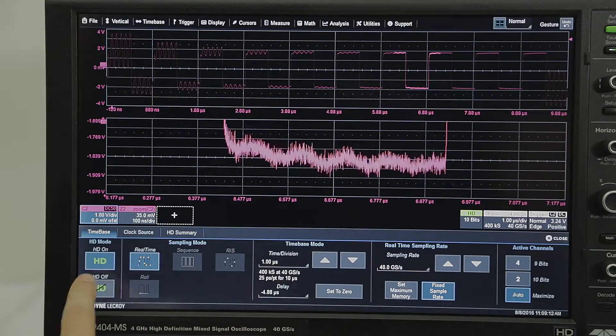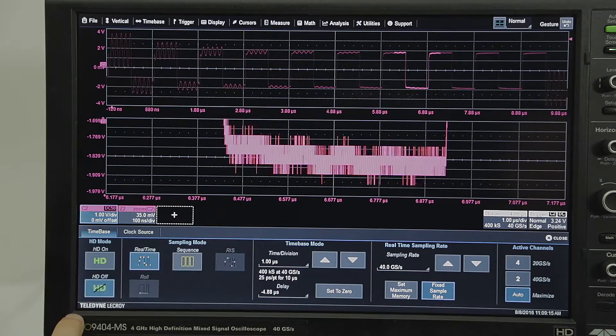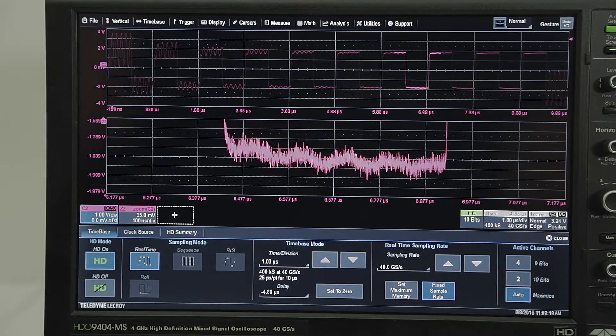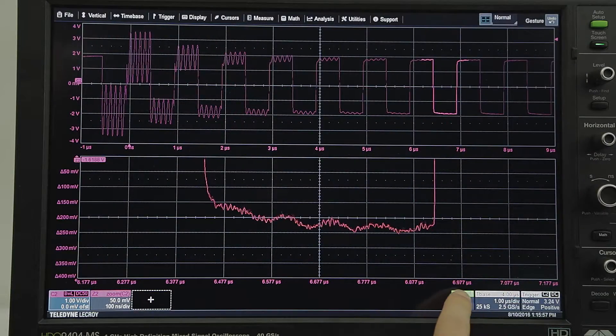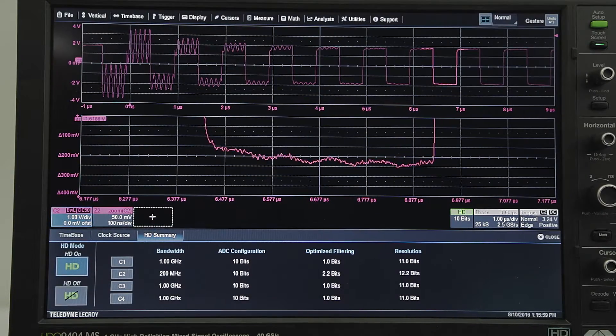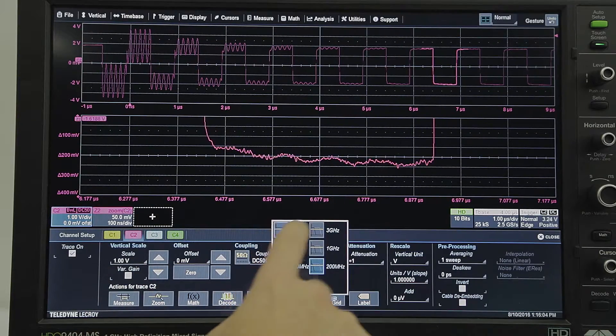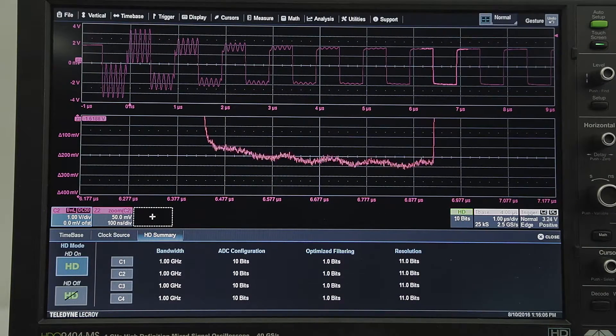HDO9000 high-definition oscilloscopes leverage HD1024 technology to deliver 10 bits of resolution up to 4 GHz of bandwidth. HD1024 technology ensures that the oscilloscope is always providing the optimal resolution under each measurement condition for exceptional signal fidelity.